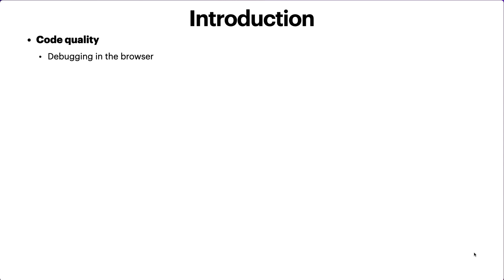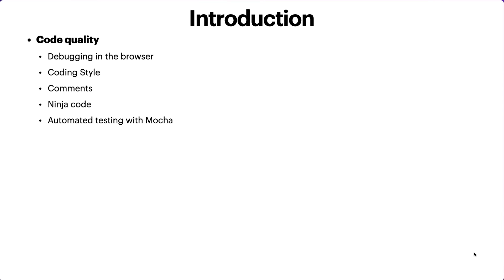We're also going to focus on code quality topics: debugging in the browser, coding style and how you should write your code for better readability, how to write comments, what ninja coding is, and automated testing. When you write code you want to ensure code quality, so we'll learn how to write tests for JavaScript using Mocha, and preferably Jest as well. We'll also cover polyfills and transpilers.